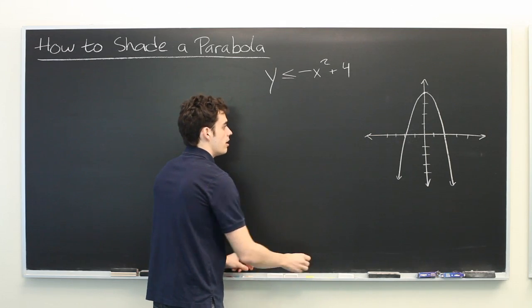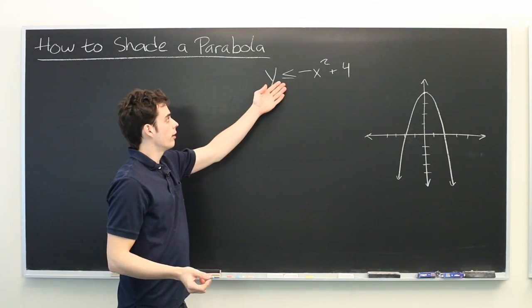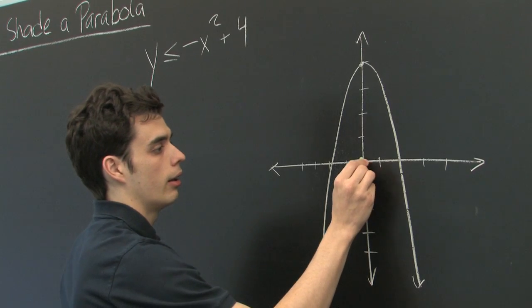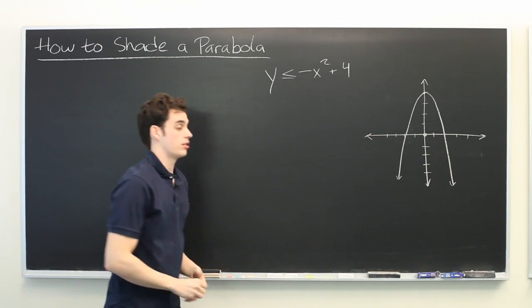And the best way to do that is to simply select a point in one of those two regions, plug it in here, and if it evaluates correctly, then you know you're in the right region. I'll select the origin, 0, 0, because it's very easy to evaluate.